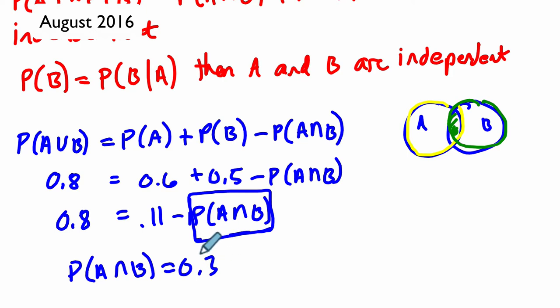All right. So how do we use this information? Well, now we know enough to solve the problem. It turns out here that we know the probability of A and B is 0.3. So does the probability of A times the probability of B equal the probability of A and B? Yes, it does.